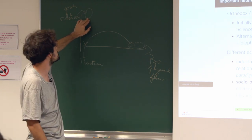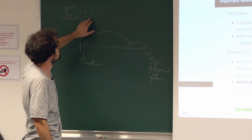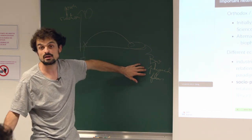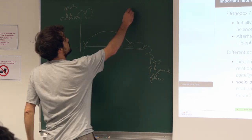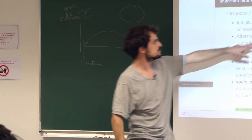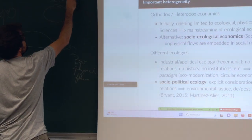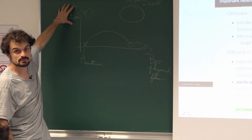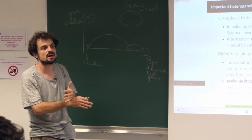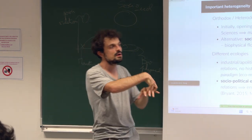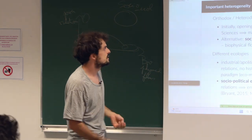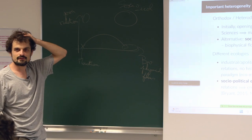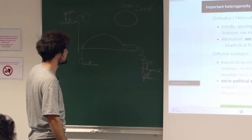Many social scientists didn't take into account the materiality of social relations. The region I will talk about today is social ecological economics — they took both into account. They take power relations into account and biophysical flows, and they try to explain and understand how those power relations are embedded in biophysical flows and vice versa.